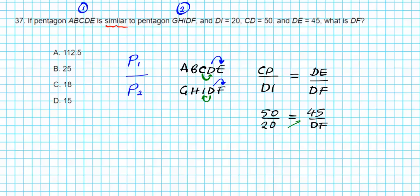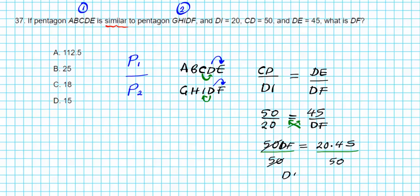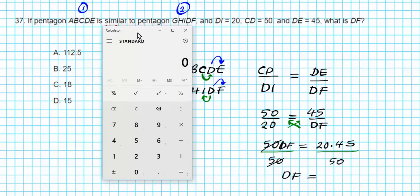So we cross-multiply: 50 times DF equals 20 times 45. To isolate DF, divide both sides by 50. You can plug this into your four-function calculator to determine the final answer.